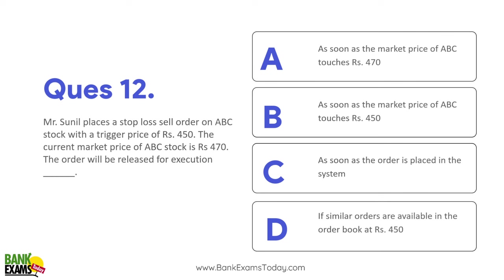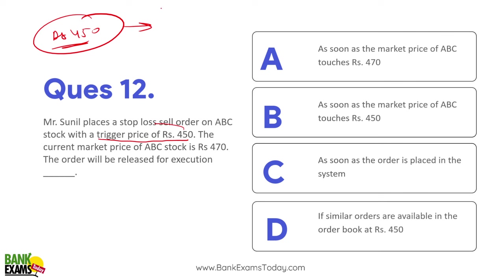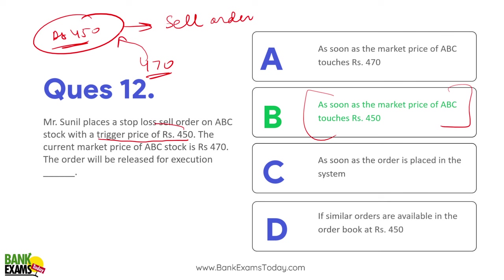Question 13: Mr. Sunil places a stop-loss sell order on ABC stock with a trigger price of ₹450. Trigger price means when the market reaches ₹450, an action is triggered — like a gun trigger. Currently market is at ₹470; when the market price of ABC touches ₹450, the sell order will be released for execution.